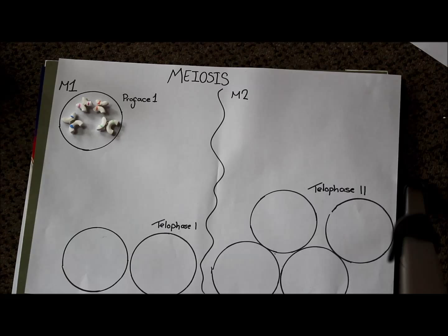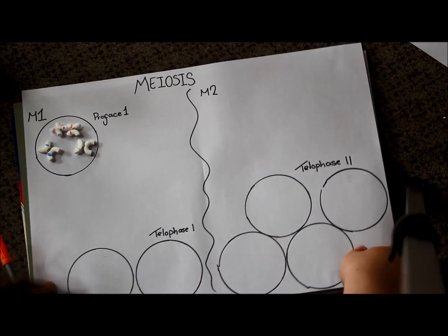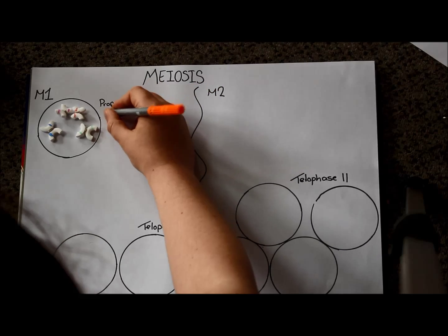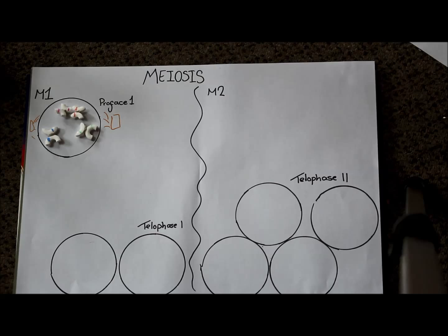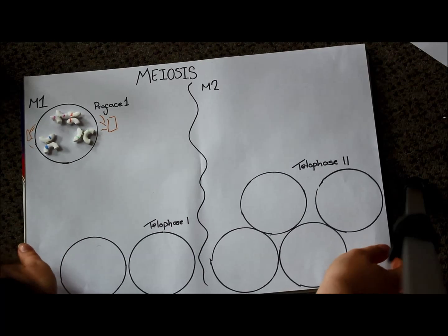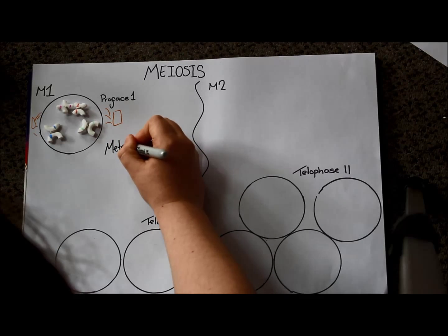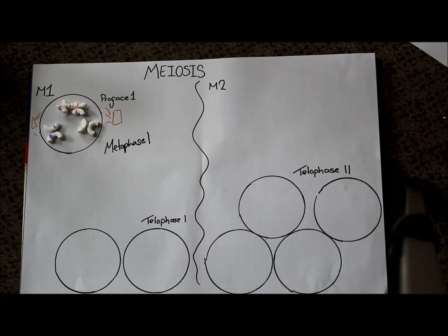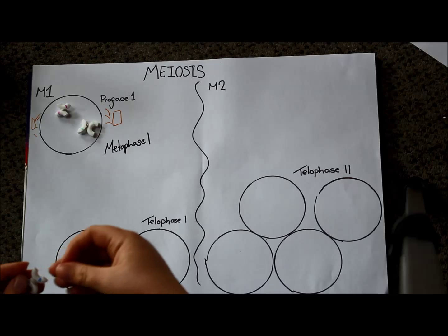But then, they do something quite special. Obviously we've got our spindles and our spindle fibres forming. But, in metaphase 1, they don't line up along the equator one by one.